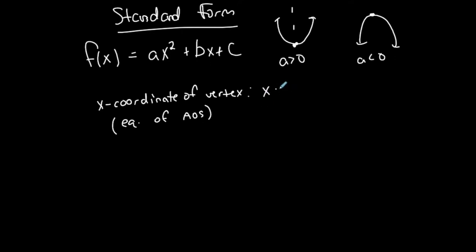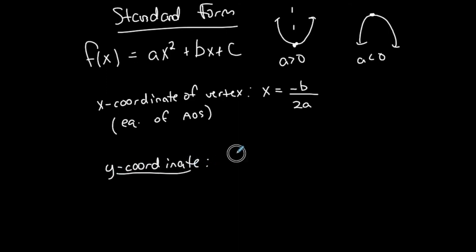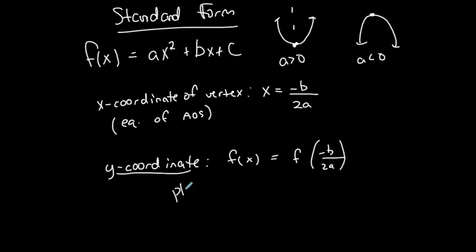So once you know the x-coordinate of your vertex, you also know the equation of your axis of symmetry. You can find that when you're in this form by taking x equal to the opposite of b over 2a, where b is the coefficient of x and a is the coefficient of x squared. This is how we find the x-coordinate of the vertex. Then obviously the y-coordinate we find by plugging in the x-coordinate — plug the x-coordinate into the equation or the function to find the y-coordinate.